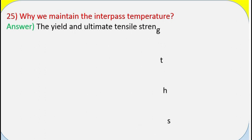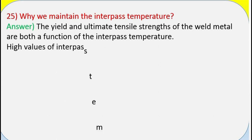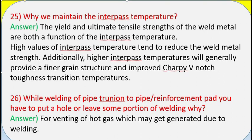Question 25: Why do we maintain interpass temperature? Answer: The yield and ultimate tensile strengths of the weld metal are both a function of the interpass temperature. High values of interpass temperature tend to reduce the weld metal's strength. Additionally, higher interpass temperatures will generally provide a finer grain structure and improve Charpy V-notch toughness transition temperatures. Question 26: While welding a pipe trunnion to pipe or reinforcement pad, why do you put a hole or leave some portion of welding open? Answer: For venting of hot gas which may be generated due to welding.